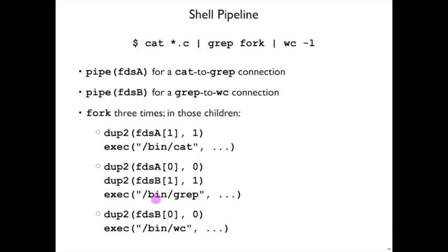Meanwhile, in the fork for grep, it'll dup the read end of fdsA to the input of grep. At the same time, it'll dup the output of fdsB to be the output of grep, and the input of fdsB to be the input of wc.